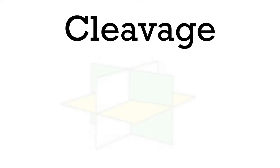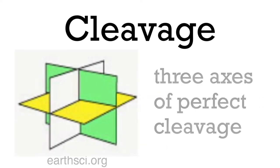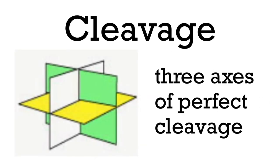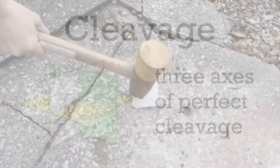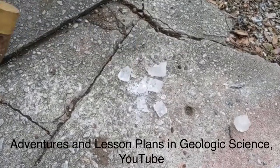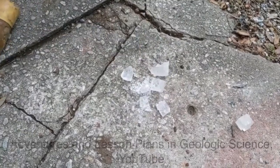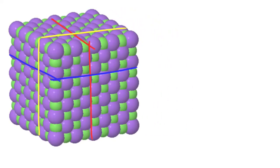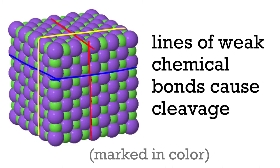Halite has cleavage on three axes, all at 90 degrees in relation to one another, which gives it the ability to break apart into cubes. This is because the molecules are arranged in a way that makes the weaker chemical bonds line up perfectly to be able to do this.